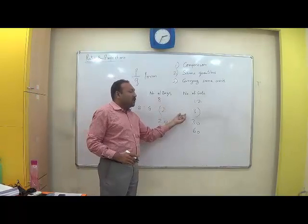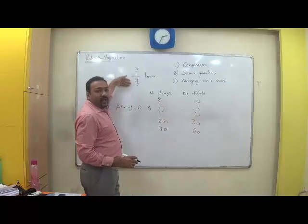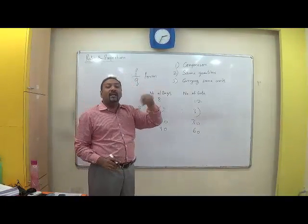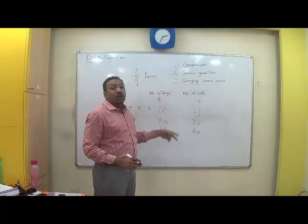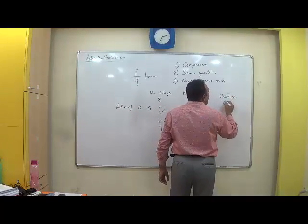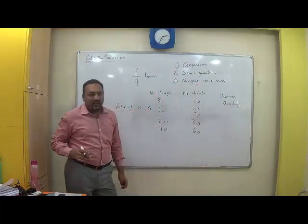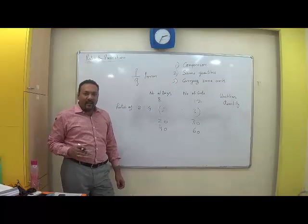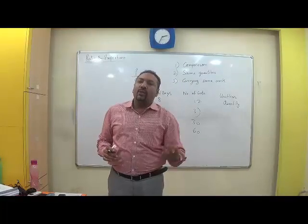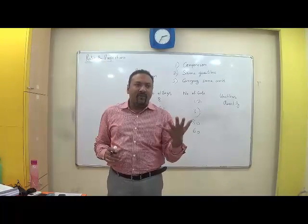No problem. It is demonstrated as a colon, 2 is to 3, and can also be written in the form P by Q. Now the moment I write P by Q, automatically the units get canceled. So it is a unitless quantity. Ratio is a unitless quantity. Is that clear? Absolutely. So I can say comparing two or more than two quantities with themselves, I can compare them with the platform of ratio.